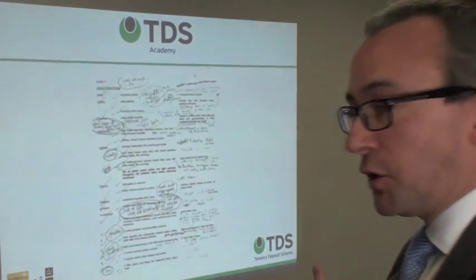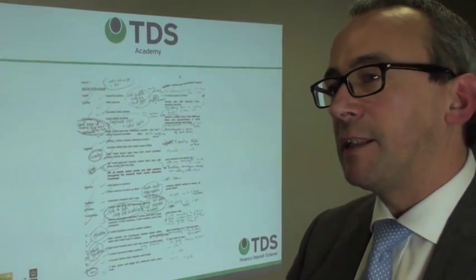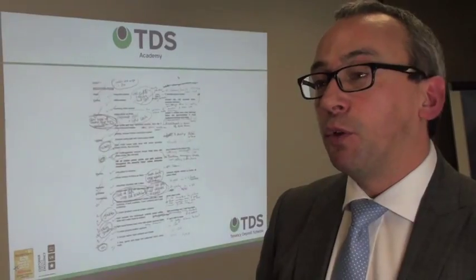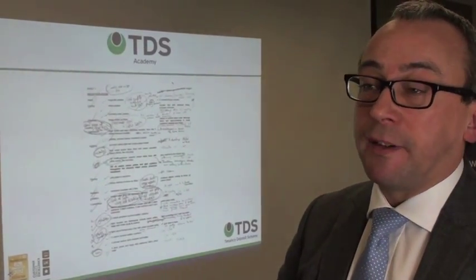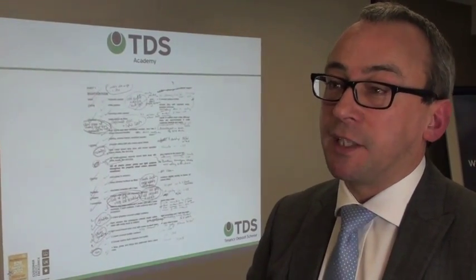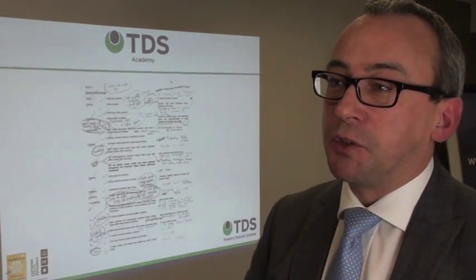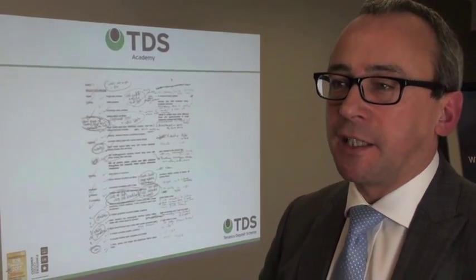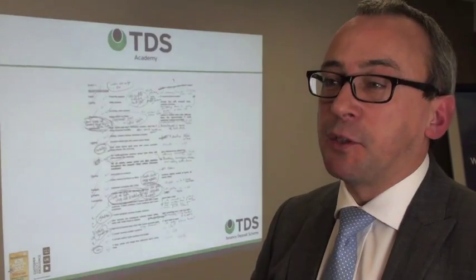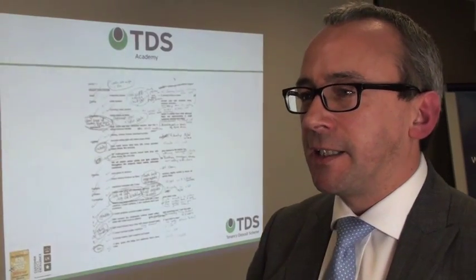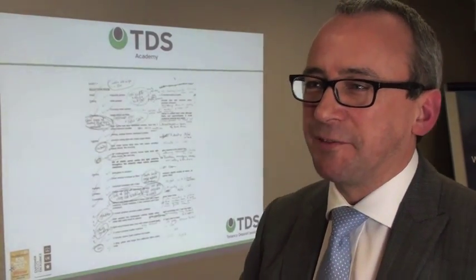It might be worth having a look at the example on screen here, which is perhaps an extreme case, but it's an example of a combined check-in and check-out report produced by an agent in an adjudication at TDS. We couldn't establish what comments had been made when; in fact it wasn't even possible to tell the property the inventory was for because it didn't have the address on it either. So no award from the deposit — the tenant got their deposit back. The agent contacted TDS afterwards and said the check-in and check-out comments were in different colours on the document, but unfortunately they'd only sent us a black and white photocopy, so that didn't really help their case either.